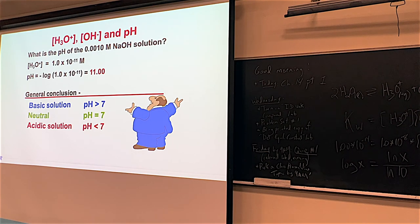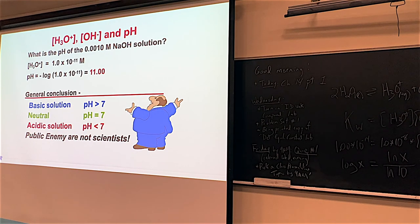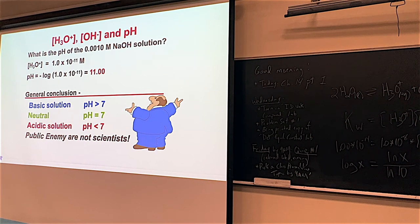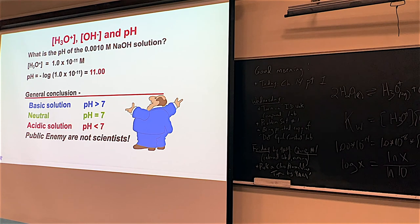Public Enemy's 'How low can you go?' doesn't apply to bases — bases have high pH. How high can you go? Acids have low pH. Bases have high pH. pH of 7 is neutral. If I have a solution with a pH of 10.5, that is basic — because any pH greater than 7 is basic. And anytime you have a pH less than 7, it's acidic.